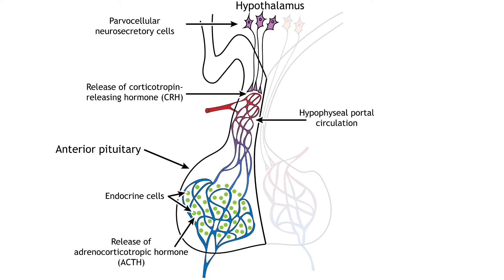Parvocellular cells are smaller than the magnocellular neurons. In the HPA axis, the parvocellular neurosecretory cells release a hormone called corticotropin-releasing hormone, or CRH, into a specialized capillary system that lies between the hypothalamus and the pituitary called the hypophysial portal circulation.